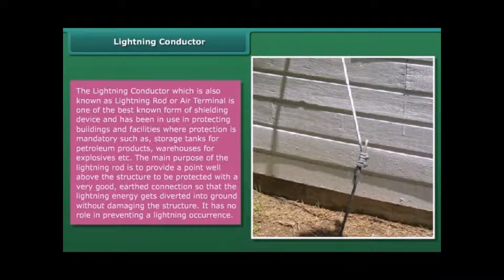The main purpose of the lightning rod is to provide a point well above the structure to be protected with a very good earthed connection so that the lightning energy gets diverted into ground without damaging the structure. It has no role in preventing a lightning occurrence.